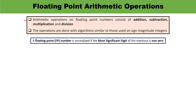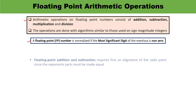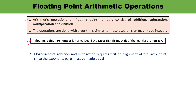A floating point number is normalized if the most significant digit of the mantissa is non-zero — meaning the MSB must be non-zero. For addition and subtraction, there is a requirement to align the radix point because the exponent parts must be made equal. When the exponent parts are equal, addition and subtraction can be performed directly.